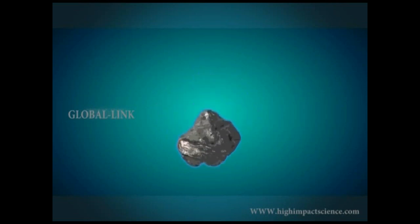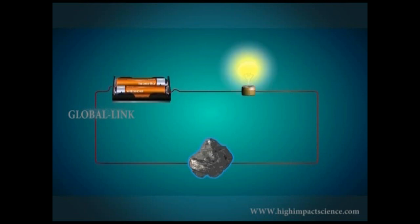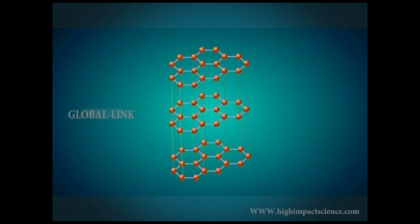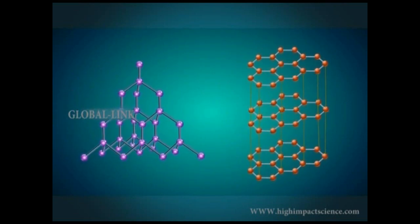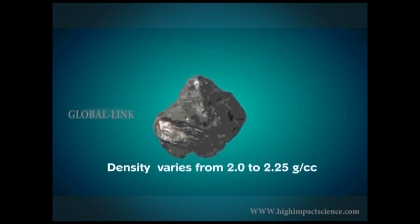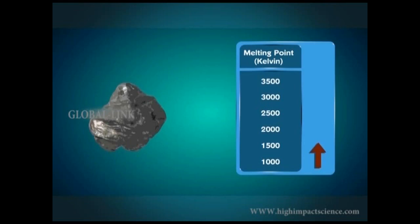Since one electron of each carbon atom in graphite is free to move about, graphite is a good conductor of electricity. The layers are held together by weak Van der Waals forces. Due to its structure, graphite is not as hard as diamond and is greasy. It's gray in color and opaque with metallic luster. Graphite's density varies from 2 to 2.5 grams per cubic centimeter and melts at 1800 Kelvin.